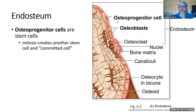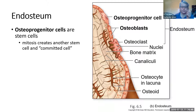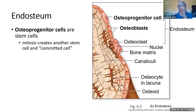First we have these osteoprogenitor cells. Osteo means bone, pro means before, and gen means create. So these are the cells that are going to create the cells that make new bone — they're not the osteoblasts themselves. They are the ones that make the osteoblasts. They do mitosis: the original cell stays, and the new cell becomes an osteoblast.